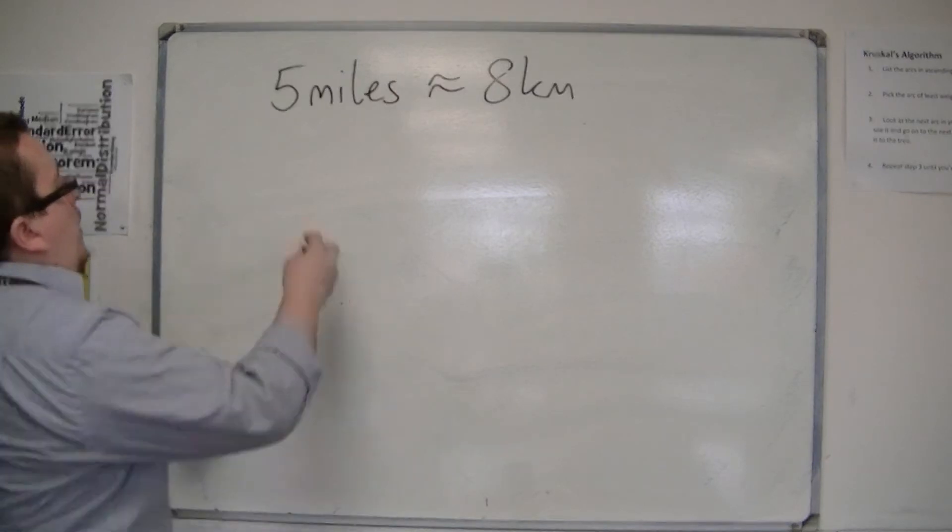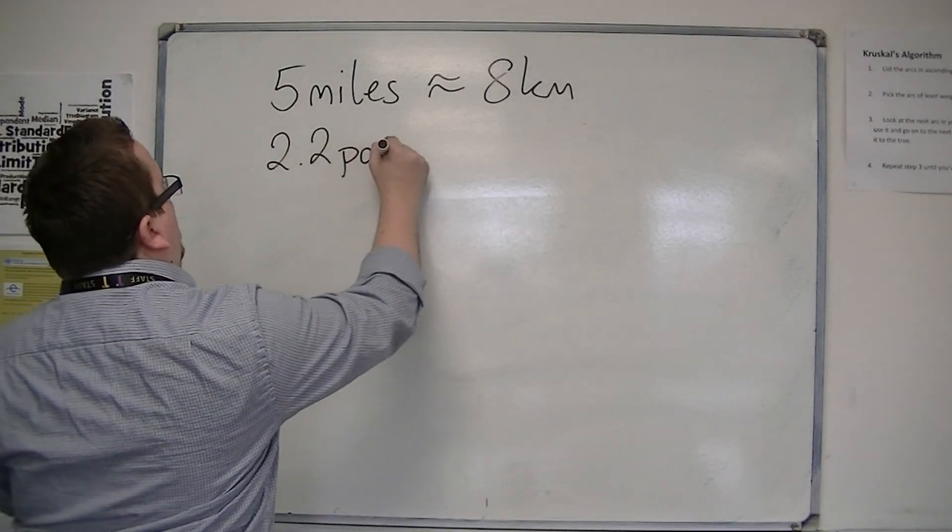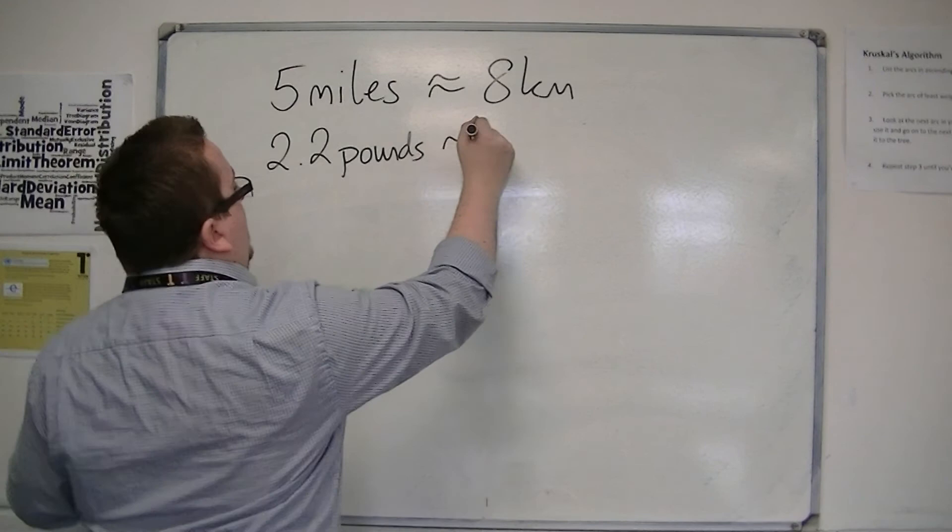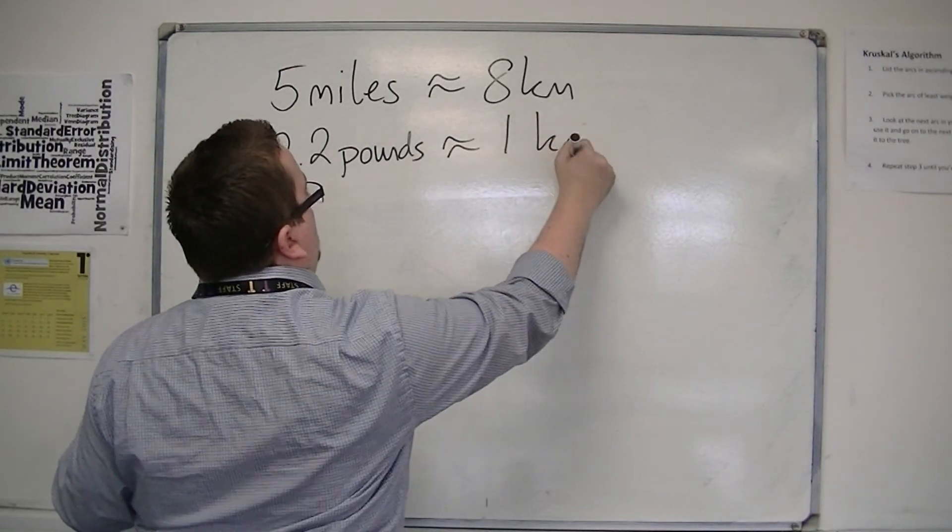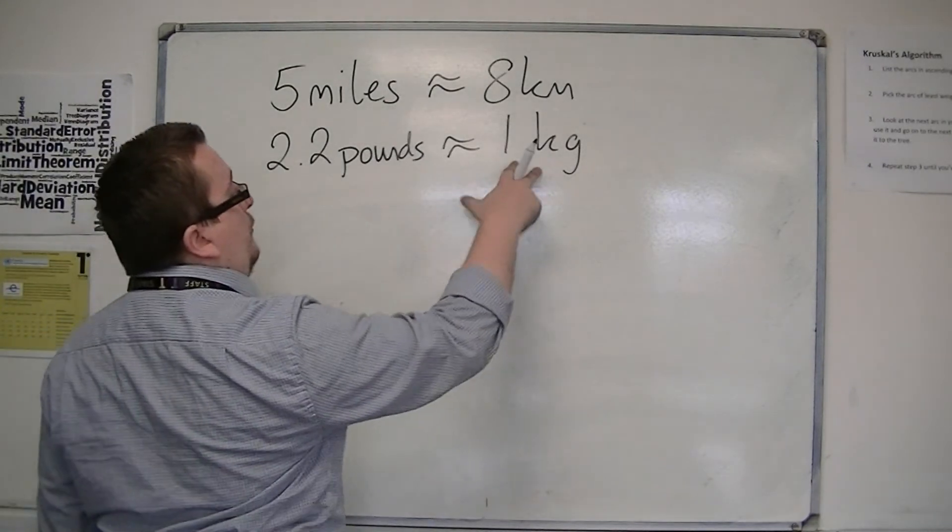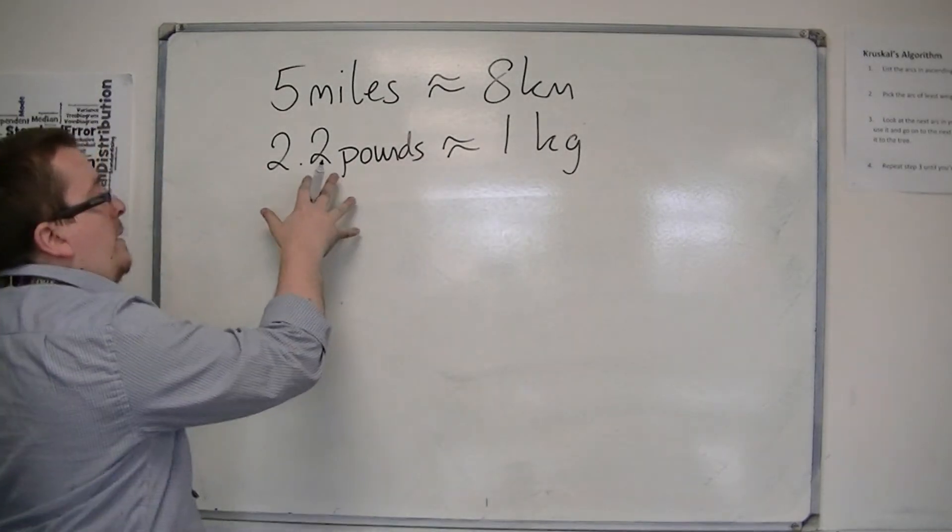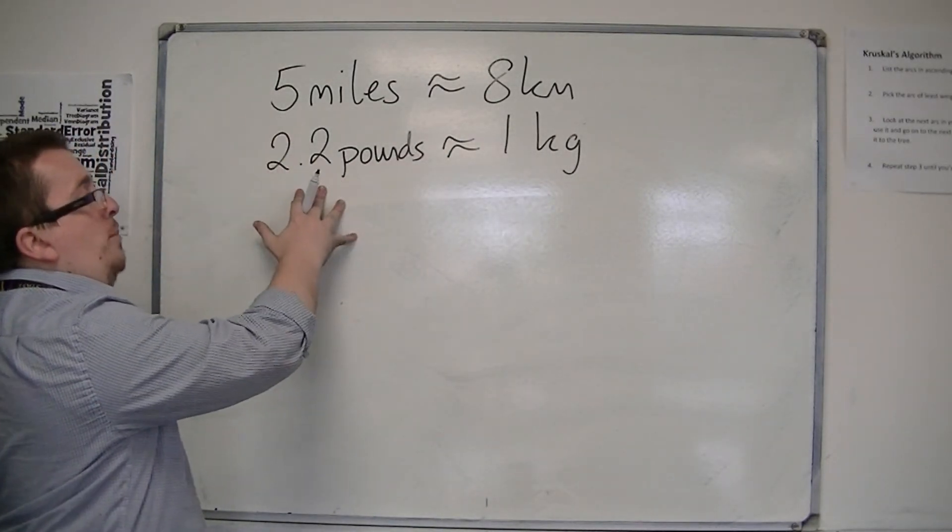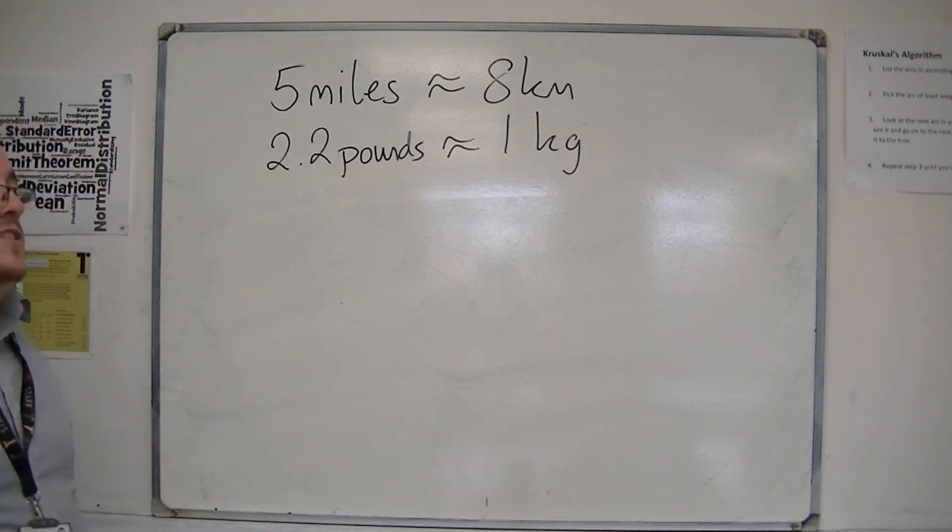Another one is 2.2 pounds, the imperial pounds, is approximately one kilo. So if you wanted to know how many pounds 2 kilos was, then you can multiply that by 2 and say, well, 4.4 pounds would be approximately 2 kilos.